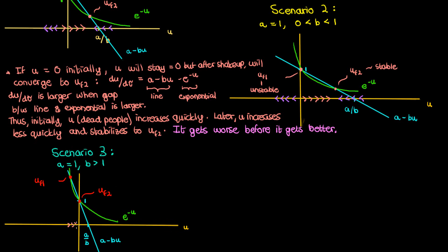This time according to these flows which tell us where u is going according to the sign of the derivative you can see that the zero fixed point is stable and the negative fixed point is unstable. So now when b is greater than one then when I start with zero dead people at the start of my epidemic I will continue to have zero dead people.